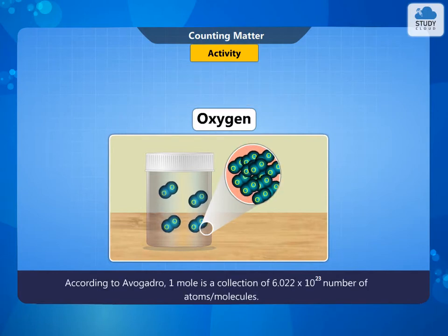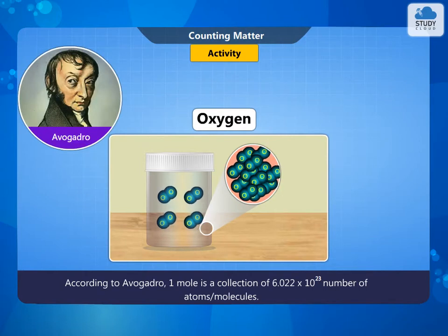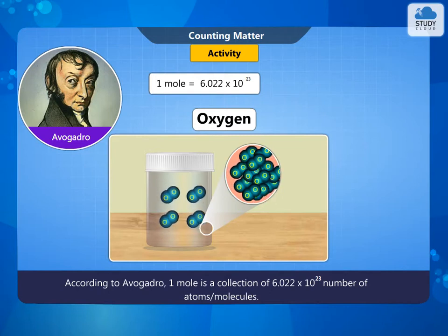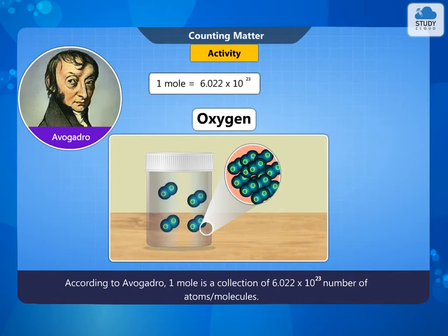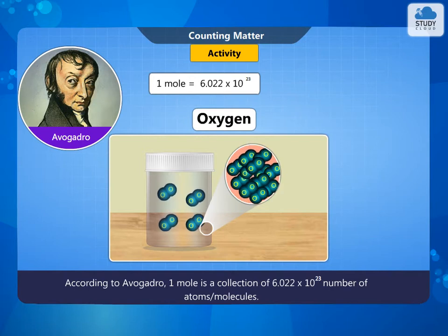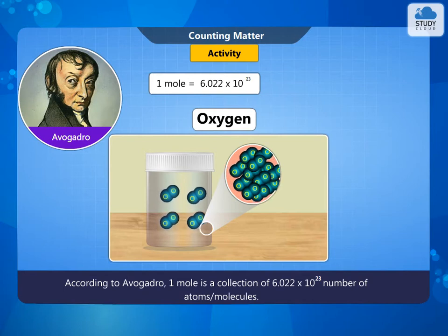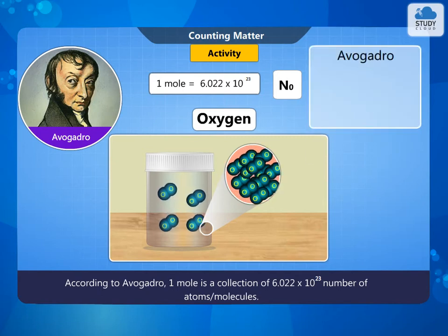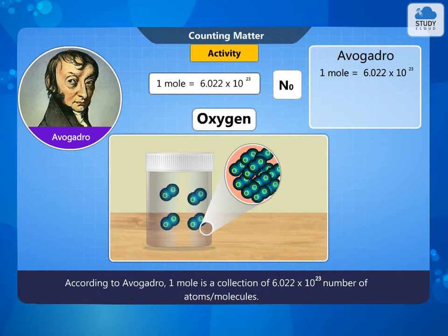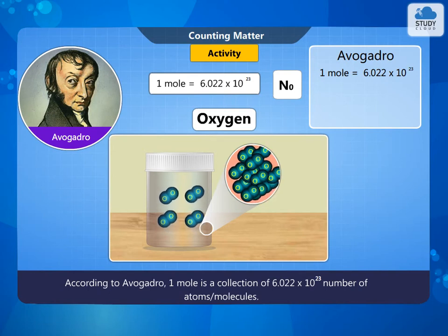One of the renowned scientists, Avogadro, experimentally found that one mole of any atom or molecule contains 6.022 × 10²³ atoms or molecules. According to Avogadro, one mole is a collection of 6.022 × 10²³ number of atoms or molecules.